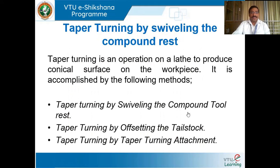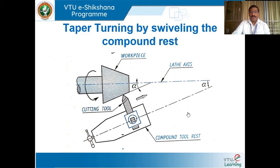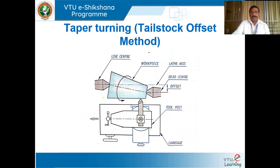We also covered two methods of taper turning: swivelling the compound rest and offsetting the tailstock. One major limitation of swivelling the compound tool rest is that only steep tapers can be produced and the length of the workpiece is limited. In the tailstock offset method the entire job is offset — the tailstock is shifted from one set of guides to another, changing the axis of the workpiece and thereby generating a taper.